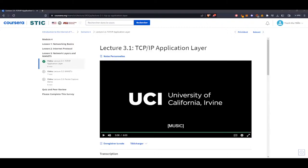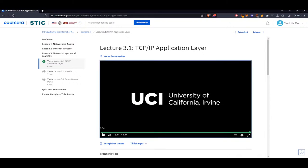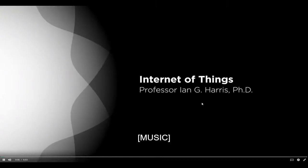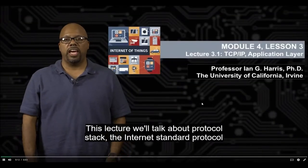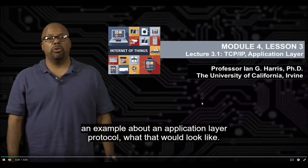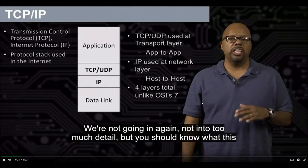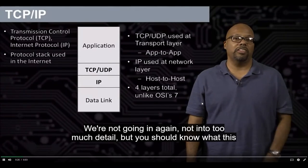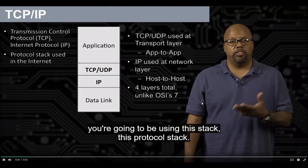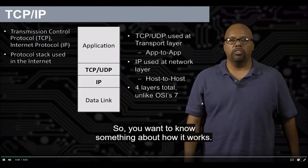We're going to continue our lesson on the TCP/IP application layer. This lecture will talk about the protocol stack — the internet's standard protocol stack, which involves TCP/IP. I'll give a brief example of what an application layer protocol looks like. We won't go into too much detail, but you should know what this protocol stack looks like because any time you want to write code to access the internet, you're going to be using this stack.